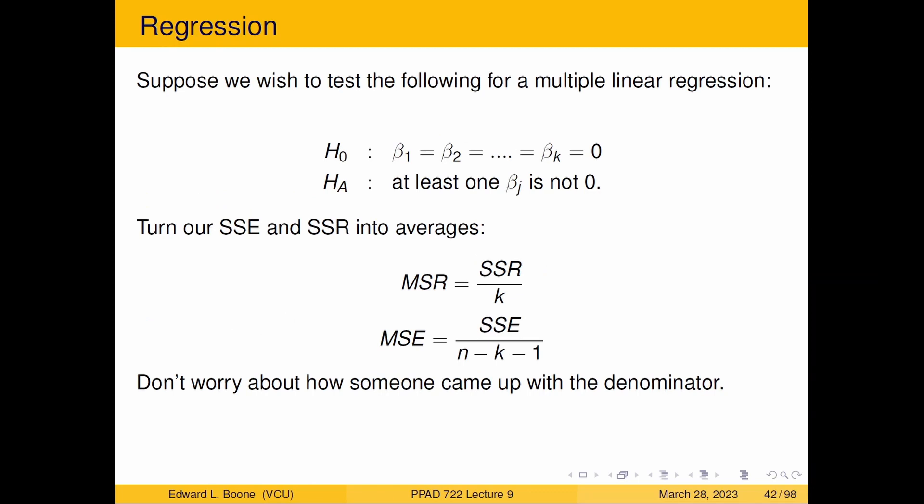All right. So what we're going to do to test this is first get an average variance that the regression is explaining. And we're going to get an average variance that's unexplained. And don't worry about where this K came from or the N minus K minus one at this point. These are just the formulas that SPSS is going to use and any of your favorite software would use.